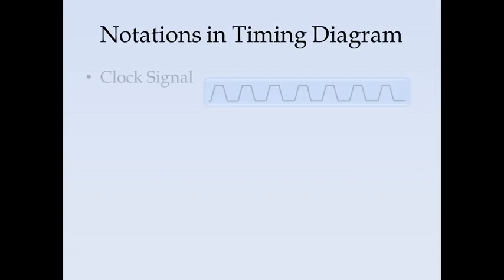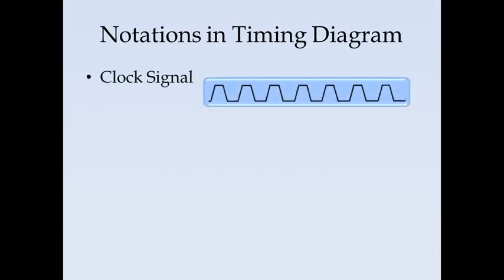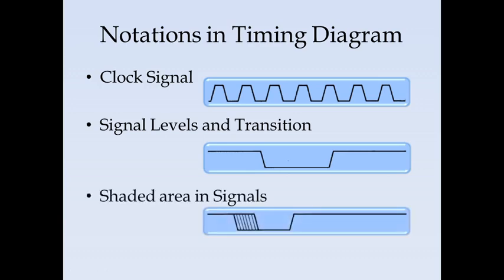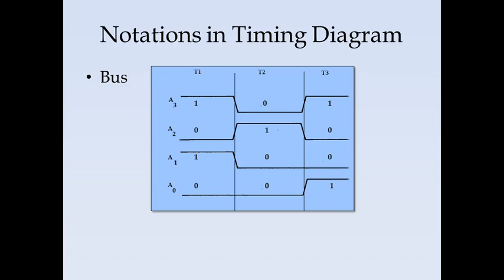Now we will see the notations in the timing diagram. The clock signal is shown first. Signal levels and transitions are represented as follows: a high level, a low level, a high-to-low transition, and a low-to-high transition. A shaded area in the signals indicates the signal may transition from high to low within that period of time.